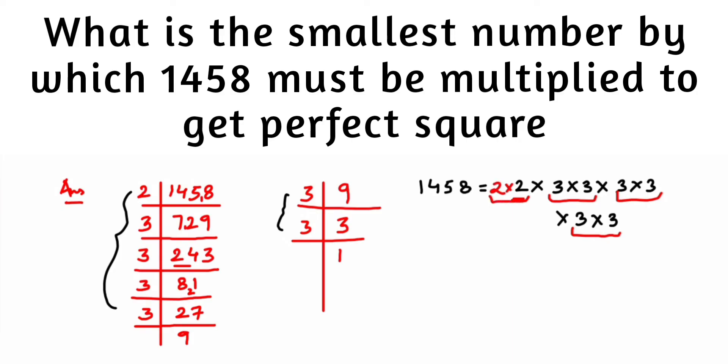If I multiply with 2 here, it will form one pair. When you're calculating a square root by prime factorization, all the factors should have a pair. Here this 2 doesn't have any pair. If I multiply with 2, it will form a pair. The smallest number to be multiplied will be 2 here.